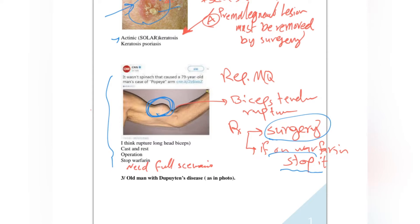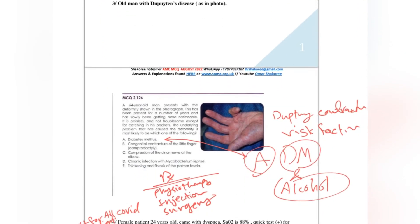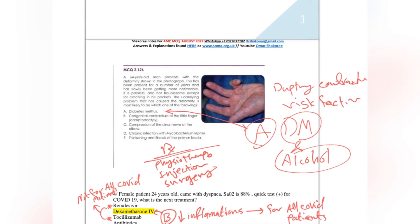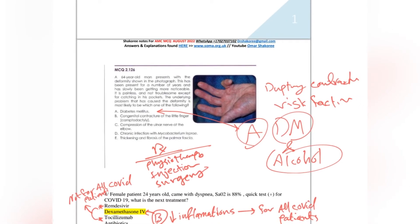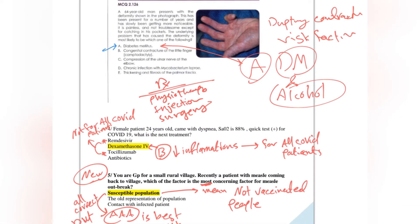Old man with Dupuytren contracture. This is very important question. Always they ask about risk factors and main causes for Dupuytren contracture. Always look for diabetes and alcohol. Diabetes mellitus and alcohol are the main risk factors and the most likely causes for patients with Dupuytren contracture.